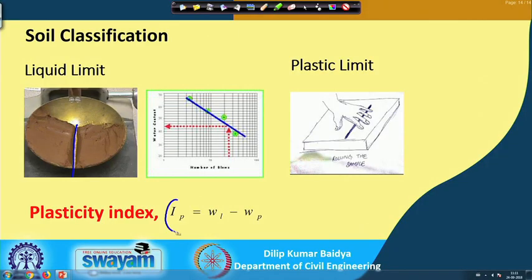The plastic limit is the water content at the particular stage when the rolled thread of 3 mm diameter is just about to crumble. If you know the plastic limit and liquid limit, you can find the plasticity index IP, which is one axis of the plasticity chart — the other axis being the liquid limit. These two values allow you to determine the classification of the soil type.